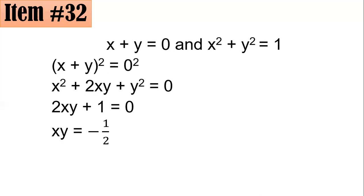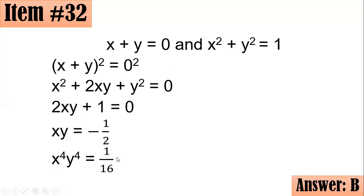Dividing by two, xy equals negative one half. However, our goal is x to the fourth times y to the fourth. Raising both sides to the fourth power gives (xy) to the fourth equals negative one half to the fourth, which is one over sixteen — that is letter B.